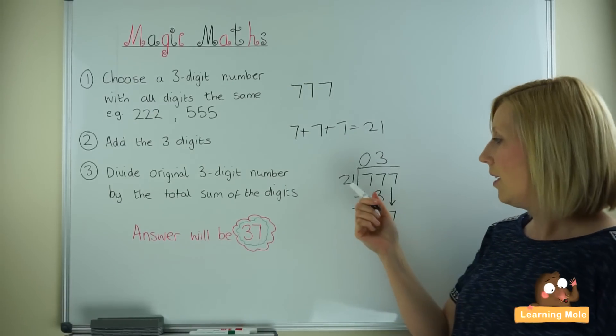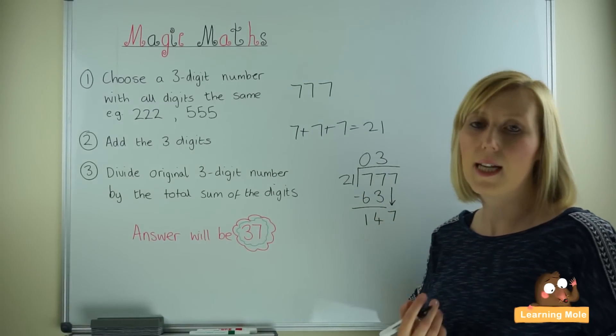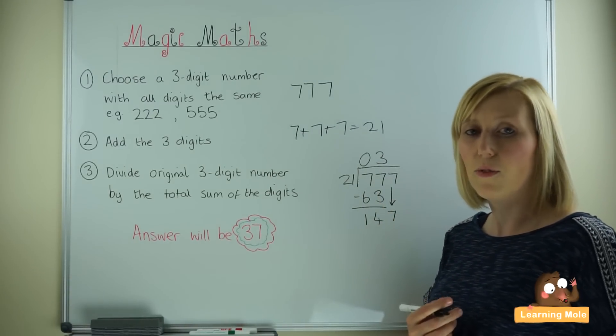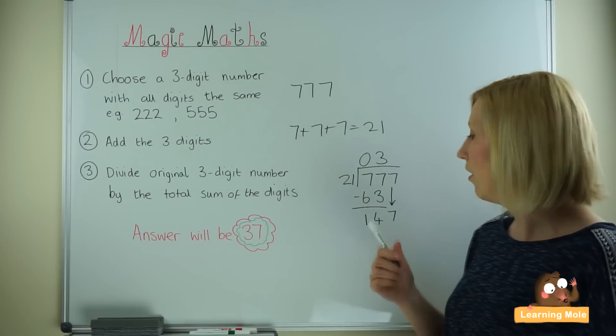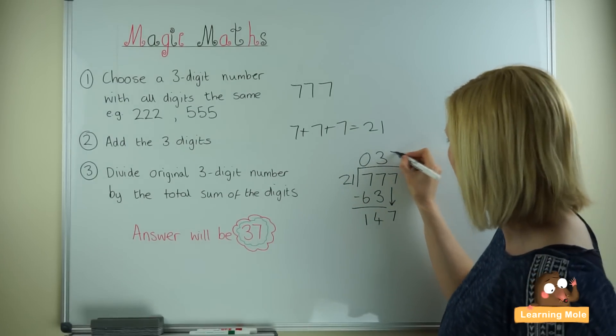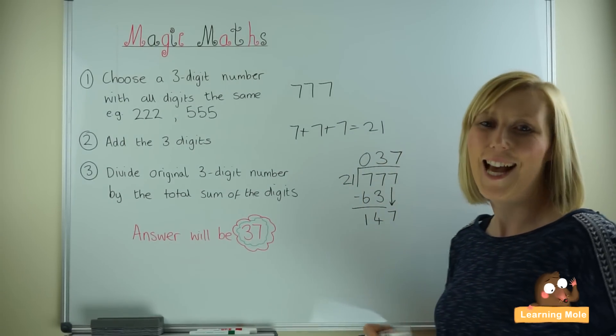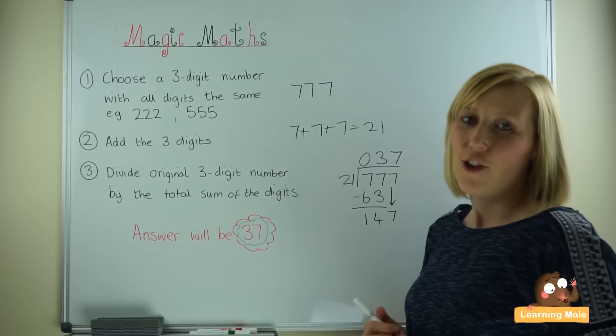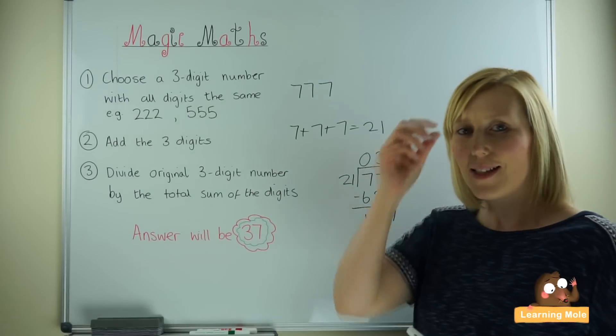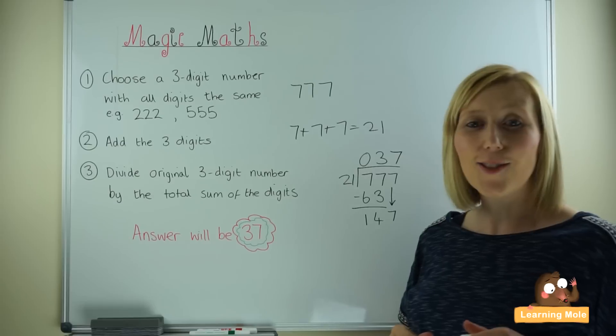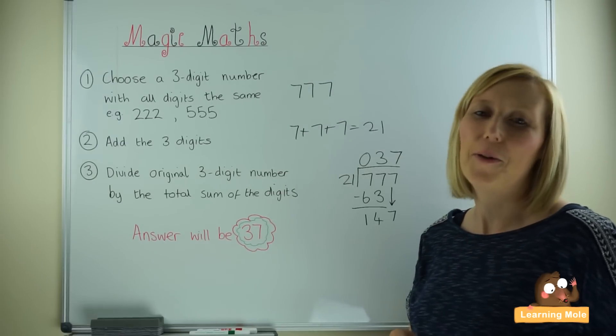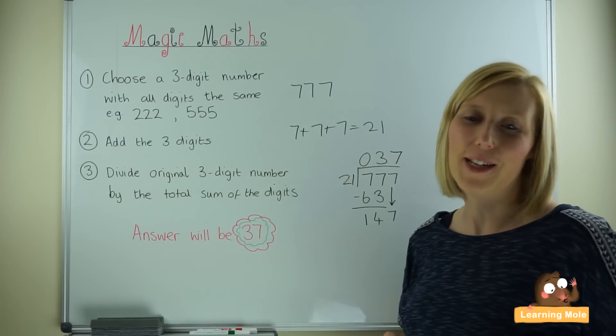147 - and if we calculate, 20 times 7 is 140 and 1 times 7 is 7, so that's 147. We know that the answer is again 37. Your child will be so impressed, the adults that they test it on will be so impressed, and it'll be a really enjoyable, fun experience for everyone.